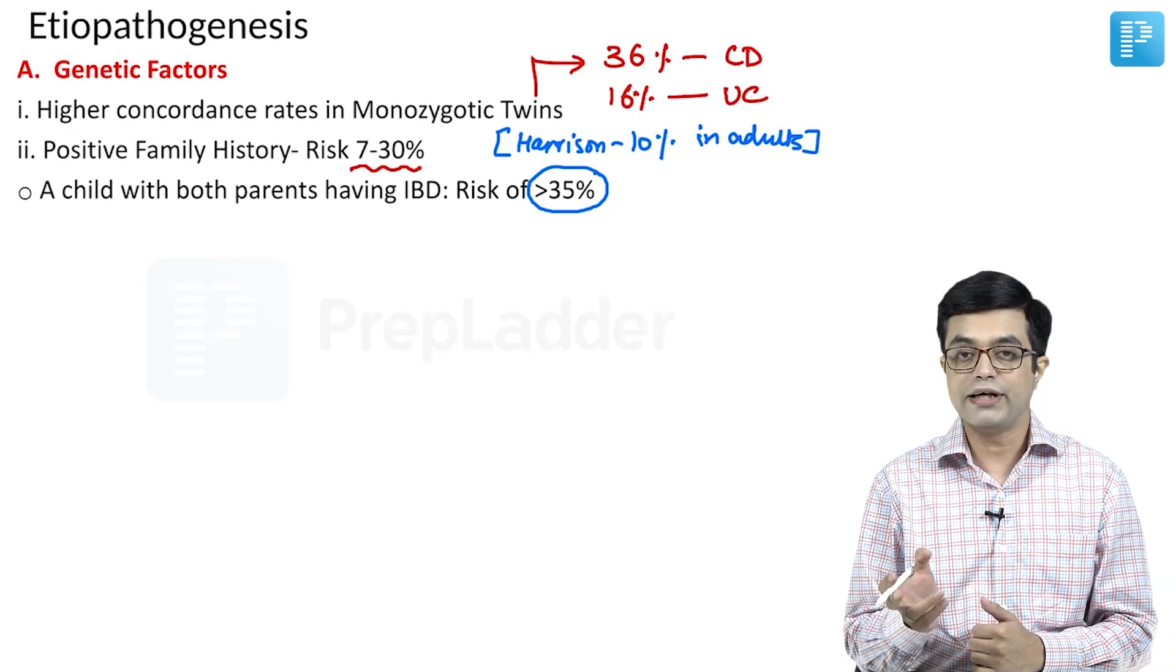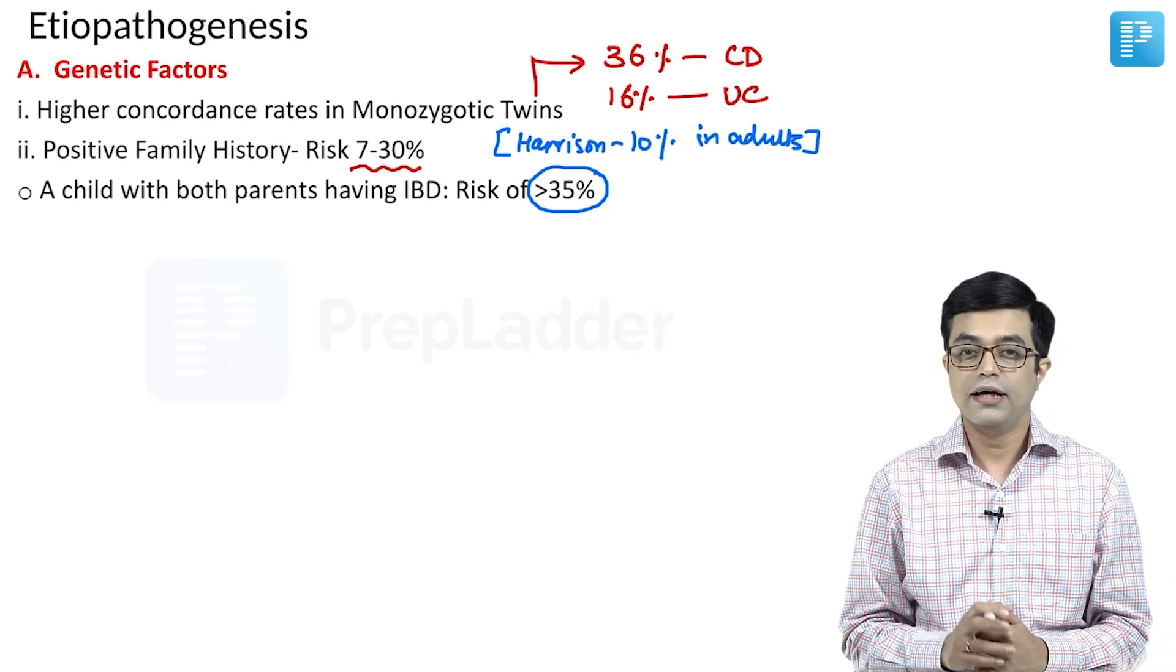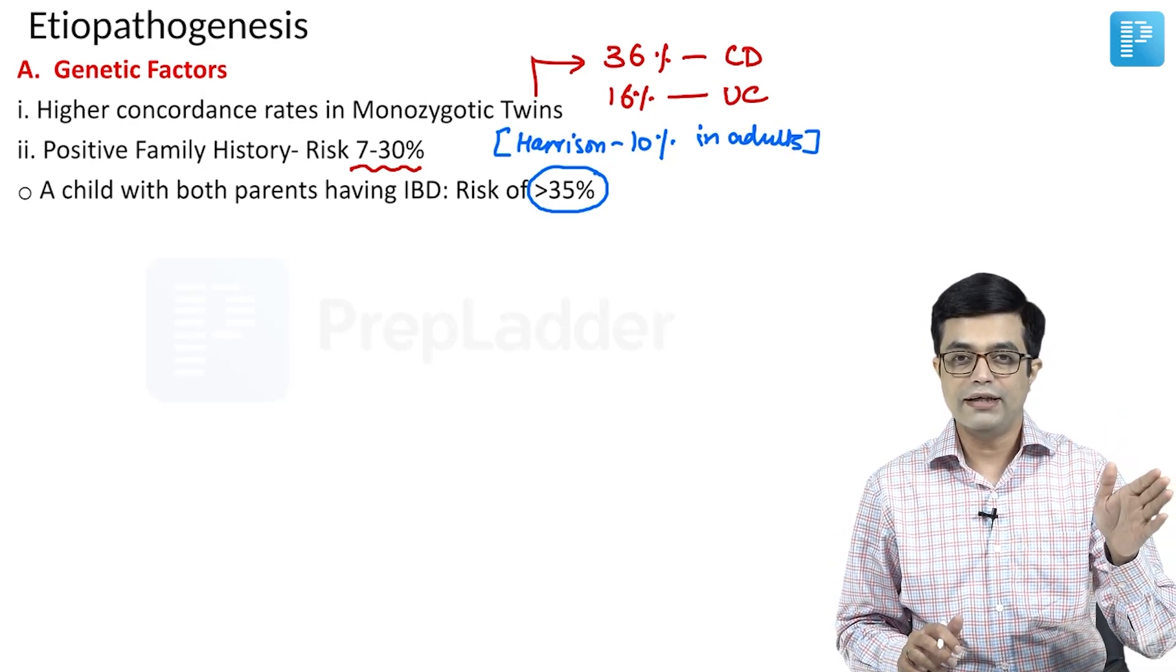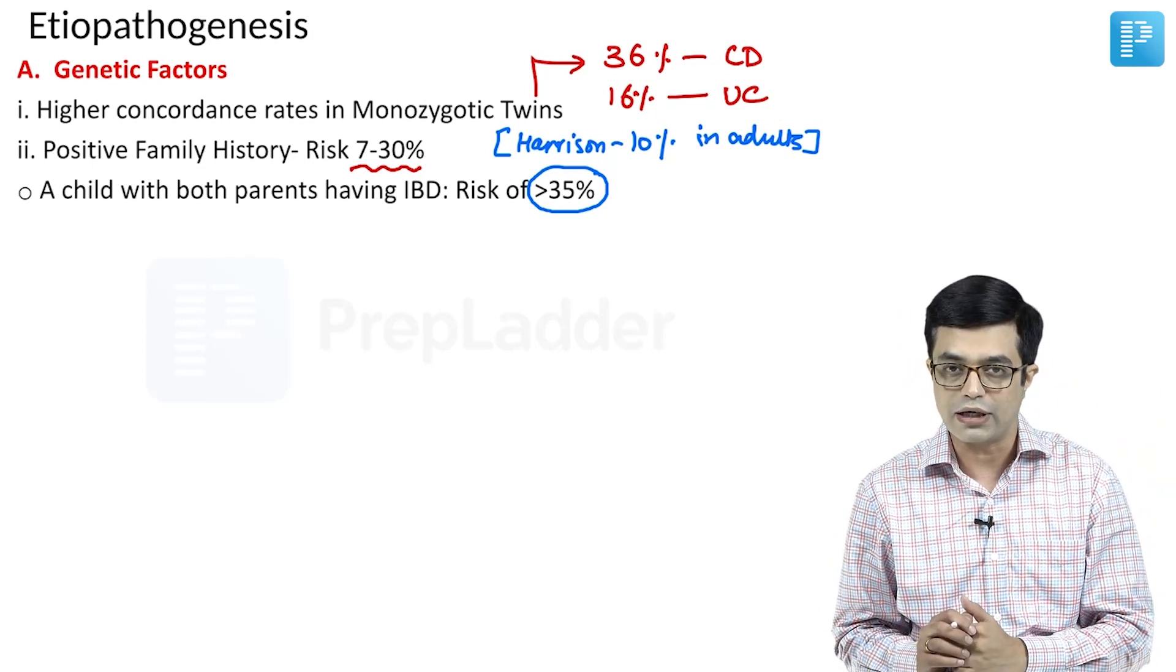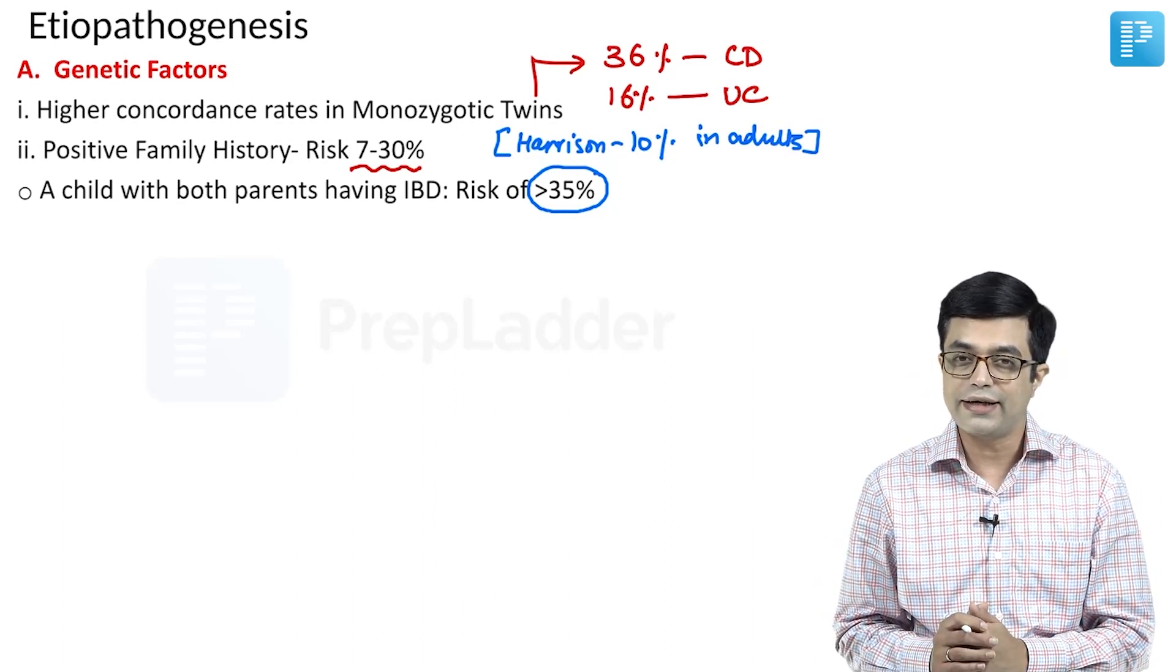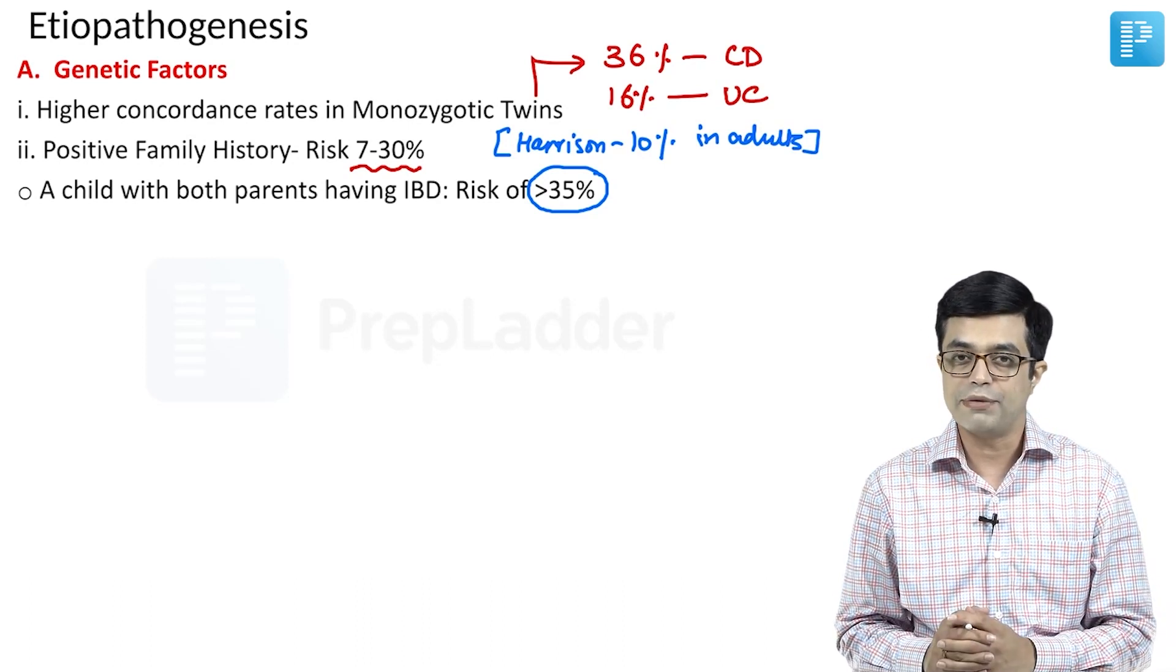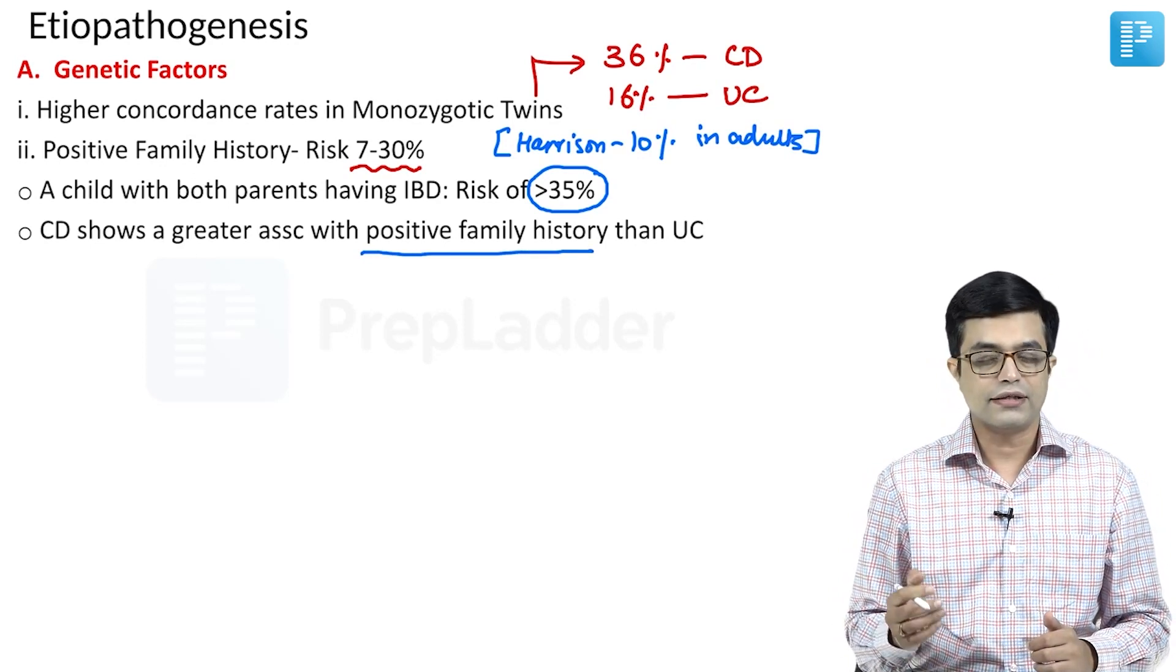If a child is having both parents having either ulcerative colitis or Crohn's disease, the child will be having a risk of more than 35%. You need to understand that positive family history of IBD means if a patient is having ulcerative colitis in the family, that does not mean that he will only develop ulcerative colitis, he can also develop Crohn's disease as well. More and more we are understanding that these two types of IBDs tend to have an overlap of the spectrum. Of course, they are distinct diseases and distinct predisposition factors have been proposed for them. Crohn's disease shows a greater association with positive family history than ulcerative colitis.